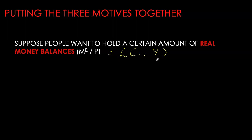Demand for liquidity depends upon real GDP and nominal interest rate. Higher the real GDP, higher will be the demand for liquidity or real money balances. Higher the nominal interest rate, lower will be the demand for liquidity — demand for real money balances decreases.